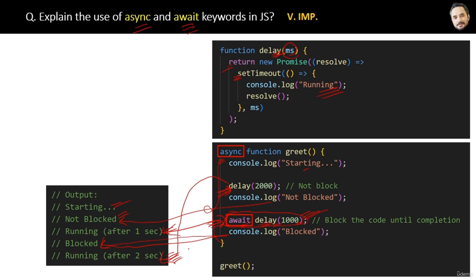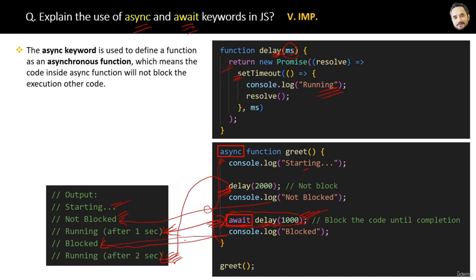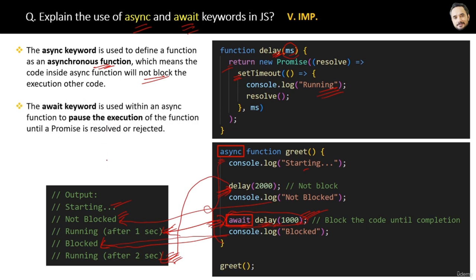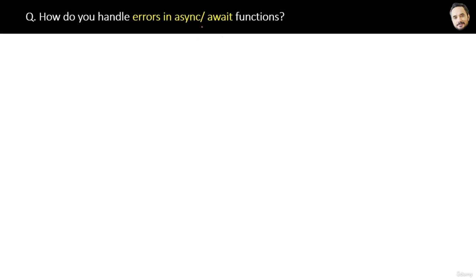The definition: the async keyword is used to define a function as asynchronous, meaning the code inside will not block the execution of other code. But at some points inside the async method, we want synchronous execution — at those points we use the await keyword. The await keyword is used within an async function to pause execution until a promise is resolved or rejected. Those are the two brothers: async and await.